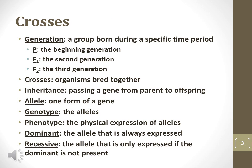A cross means two organisms are bred together to produce offspring, or progeny. A generation is a group of organisms born after a particular reproduction event. P stands for parent generation. F1 represents the first filial generation, and F2 represents the second filial generation.